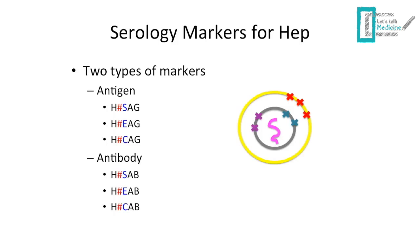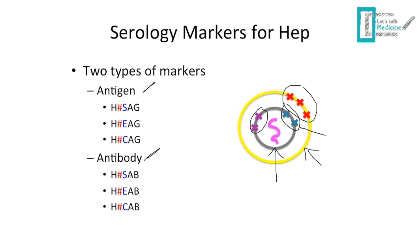Now let's talk about serological markers. We have two main types: antigens and antibodies. Looking at the virus structure, we have the envelope and the core. On the envelope, we have the surface protein, which gives us the surface antigen. On the core, we have two types of proteins: the core protein and the E protein. The E protein is important because when it is present in the blood, it means the virus is actively replicating. Antibodies correspond to each of these antigens.